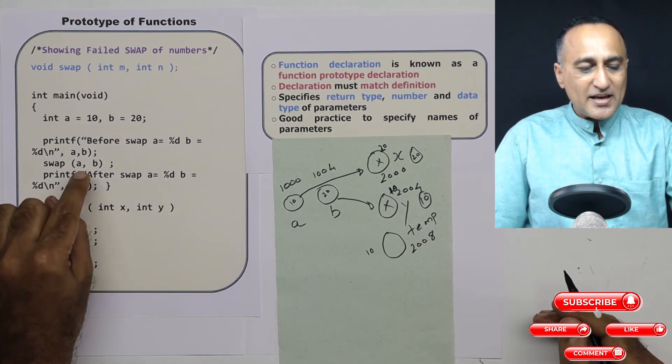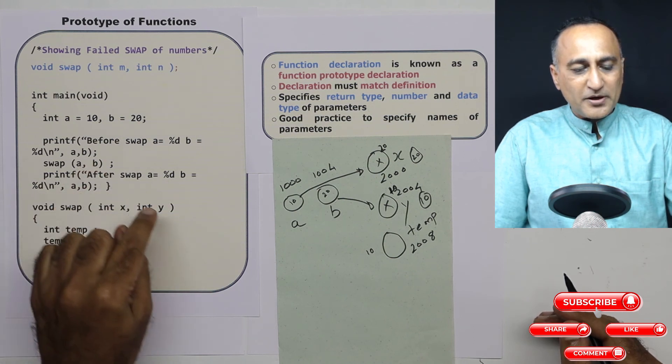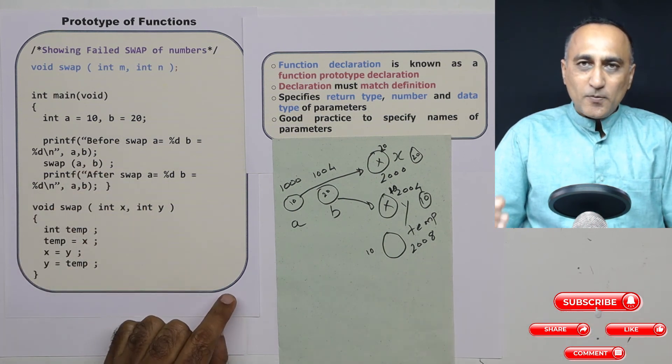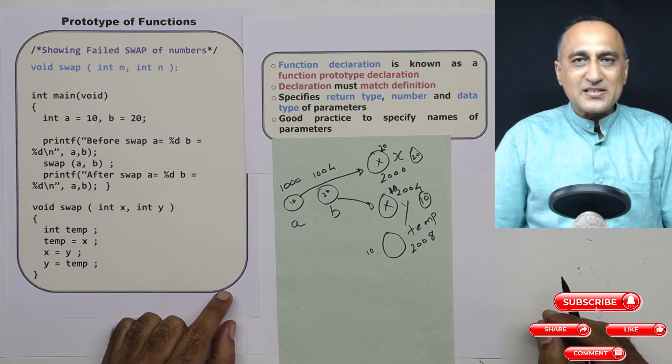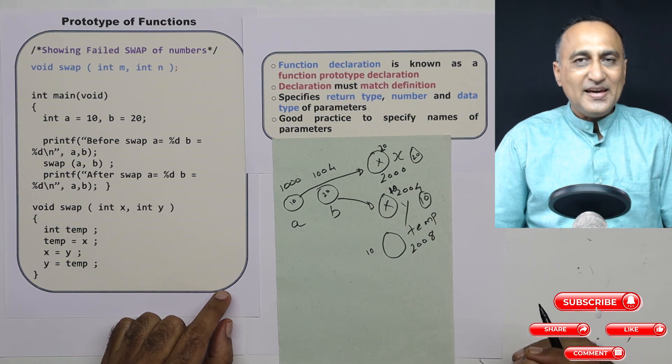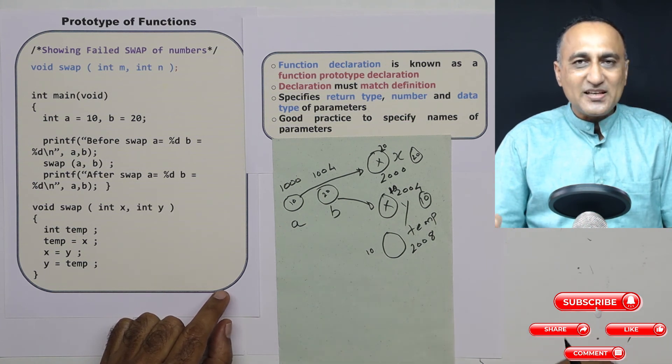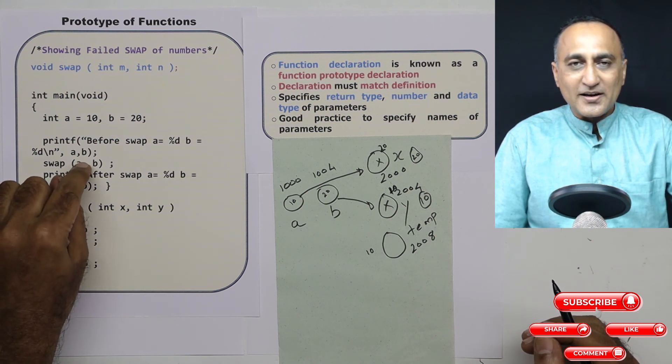Because here I sent the parameters to two different variables which happened to be two different locations. This is called pass by value. I am passing the value of A to x, value of B to y. Now we are also in future going to deal with a style of passing values called pass by reference or pass by address. In that type of passing the values, if you make any changes here, it will also be reflected back here.